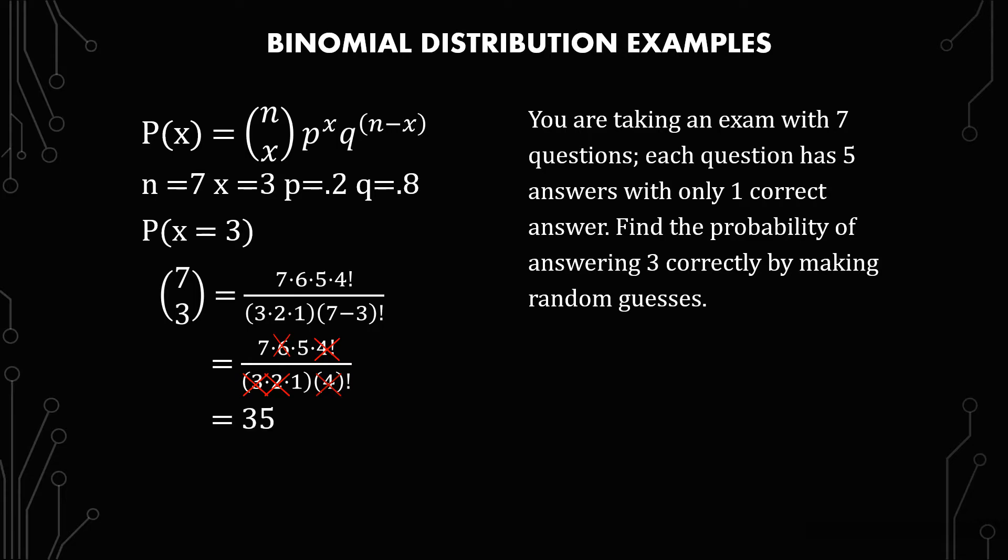From there, it's just plug and chug. You have everything you need, you just put it into the equation. And so we have P(3) equals 35 times 0.2 to the third power times 0.8 to the fourth power. And after you put this in your calculator, because you're not going to be doing this by hand, you're going to be doing this by calculator. And if you're doing it by hand, shame on your professor. The answer here is 0.114688 or about 0.115.